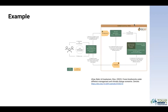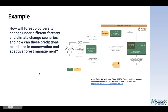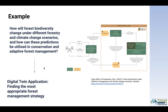For example, in this forest digital twin, we're asking questions like: how will forest biodiversity change under different forestry and climate change scenarios, and how can these predictions be utilized in conservation and adaptive forest management? Posing this question to the digital twin application can provide the answer — for example, finding the most appropriate forest management strategy given certain parameters. As you can see in the schematic, we need different components and configurations coming together to build this digital twin and provide the answer to the stakeholders.